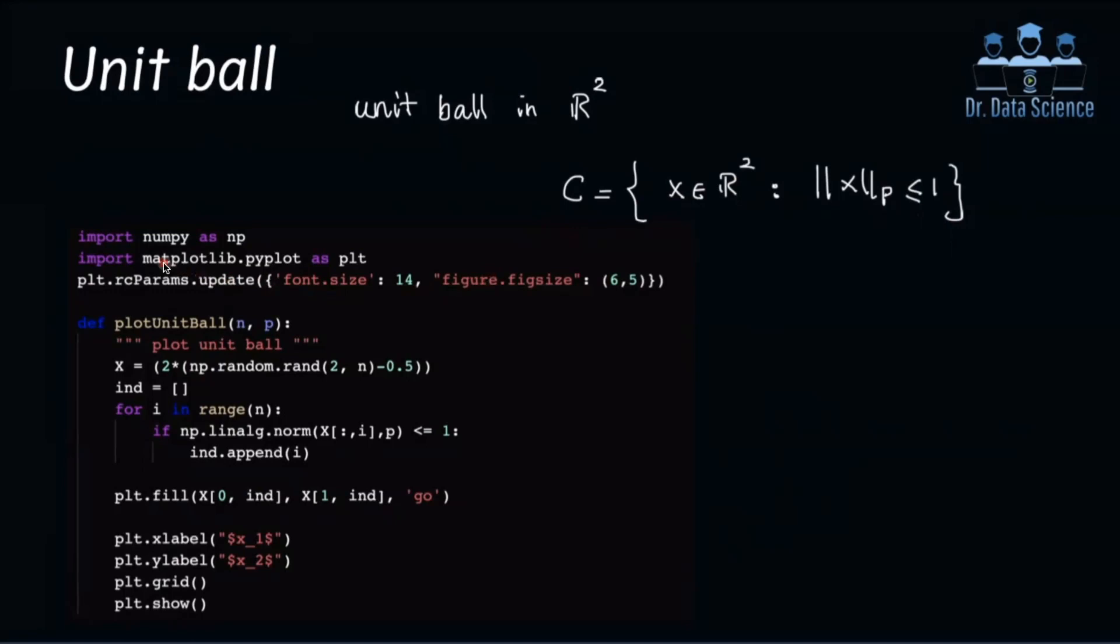So in order to implement this, we can import numpy, we can import matplotlib for visualization. In this line, I have adjusted some of the settings to increase the font size and figure size. And then I define this function, which I call plot unit ball, which accepts two inputs. So n is the number of data points that I'm going to generate, and p here is basically the p-norm, because I want to write the function to be able to find the unit ball for L1 norm, L2 norm. So this p is a variable, which I have to provide.